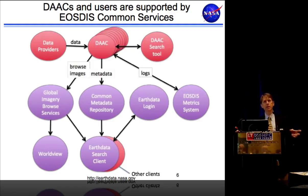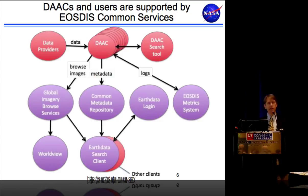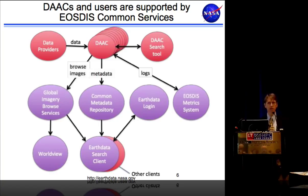We've distributed data out to the various archive centers so they can hire personnel particularly suited to support that data — support scientists, many with PhDs who have done research in the relevant discipline. On the other hand, there's the potential we've made the data a little harder to find by scattering it to the four winds. To mitigate that, EOSDIS provides a number of common services, which helps reduce overall costs and makes it possible for users to come to a single place to find data.